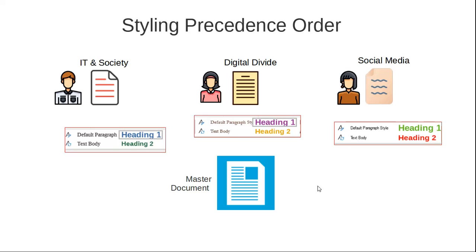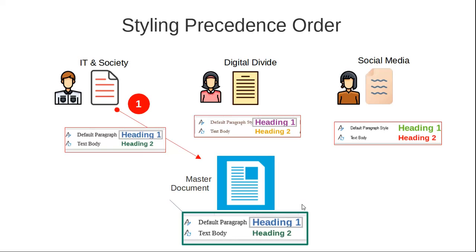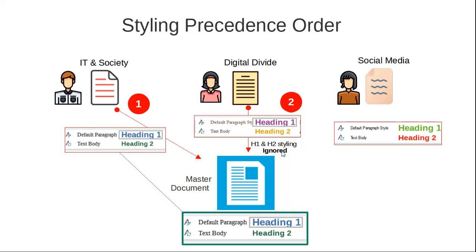If I bring my document in first, anything I have styled — like Heading 1 and Heading 2 — is inherited by the master document as its styling. Now when I bring my colleague's file in second, the styling she had is ignored and all Heading 1 and Heading 2 are shown as blue and green. Then when I bring the third document in, once again any different heading styling that colleague used is completely ignored, and all linked documents share one common styling.